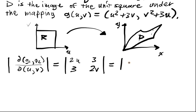And this will give us, and it's actually the absolute value of the determinant. So, we have 4uv minus 9. And now we plug that in.